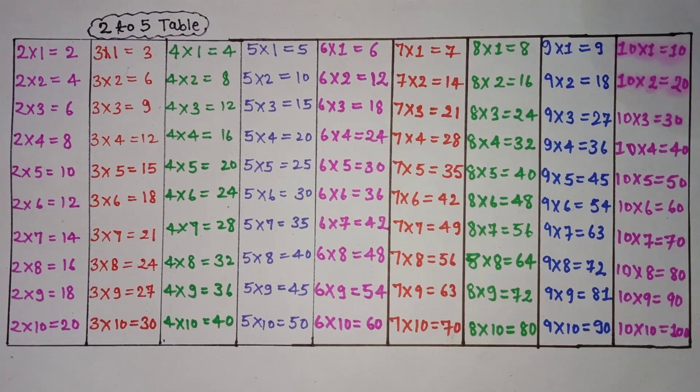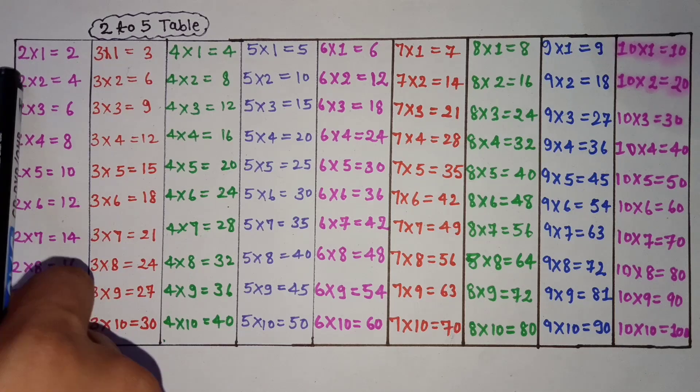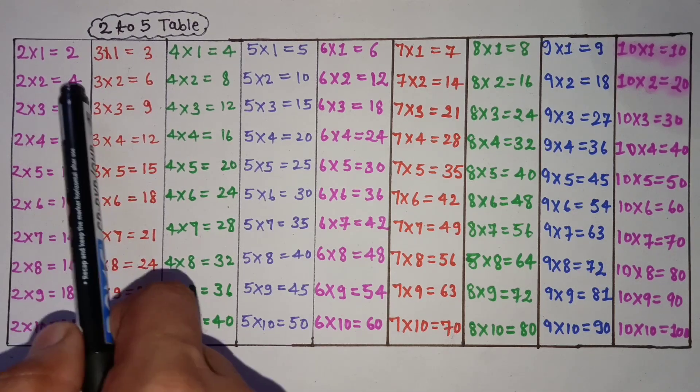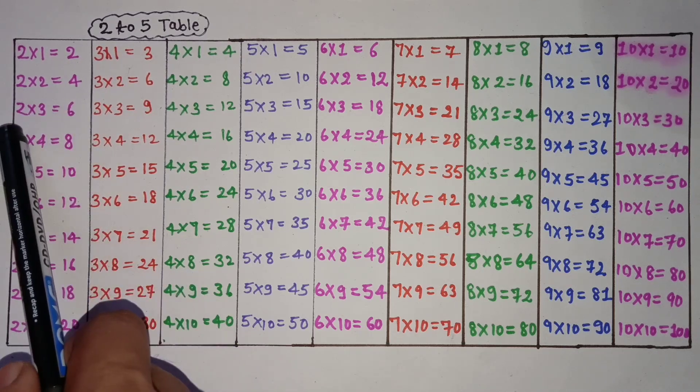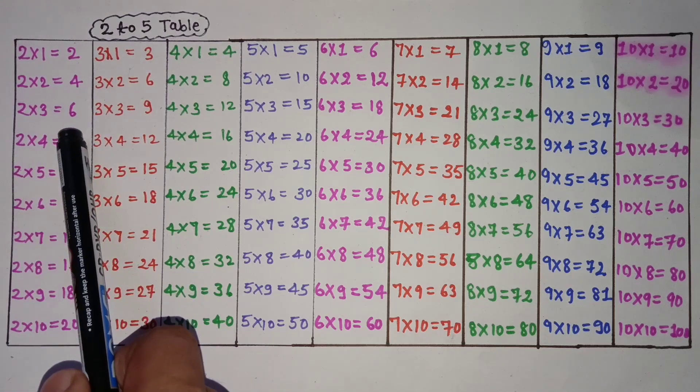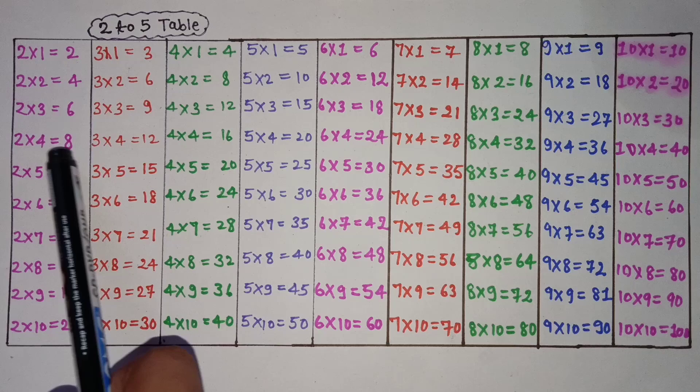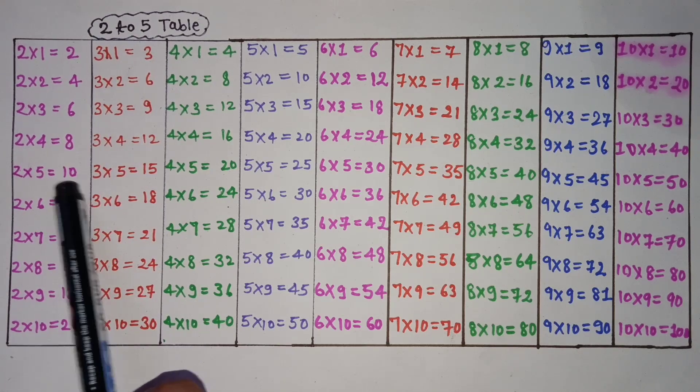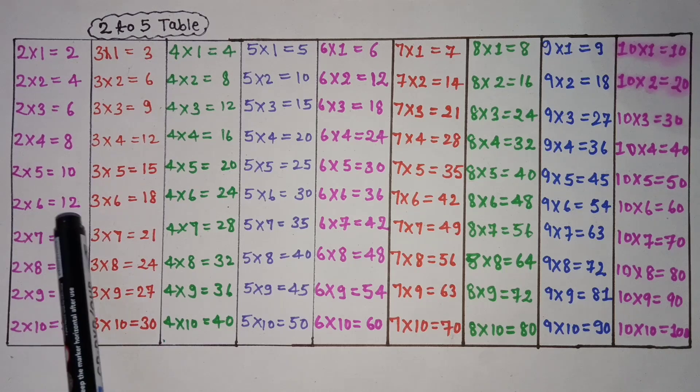2 to 5 table in English. 2 times 1 is 2, 2 times 2 is 4, 2 times 3 is 6, 2 times 4 is 8, 2 times 5 is 10, 2 times 6 is 12.